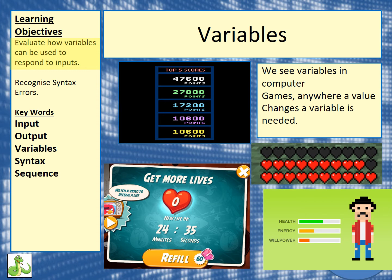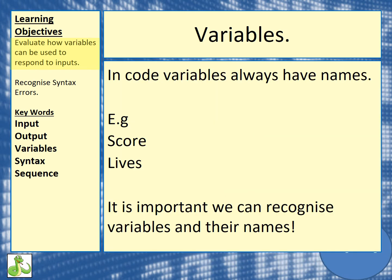The number of lives and hearts that you've got. There are a few other games here which have variables such as health, energy, willpower, top scores, points, goals, etc. Now remember, we've said that we need to know where our data is stored in RAM. So that means our variables have to have names, such as score and lives. We can use these again in the future.